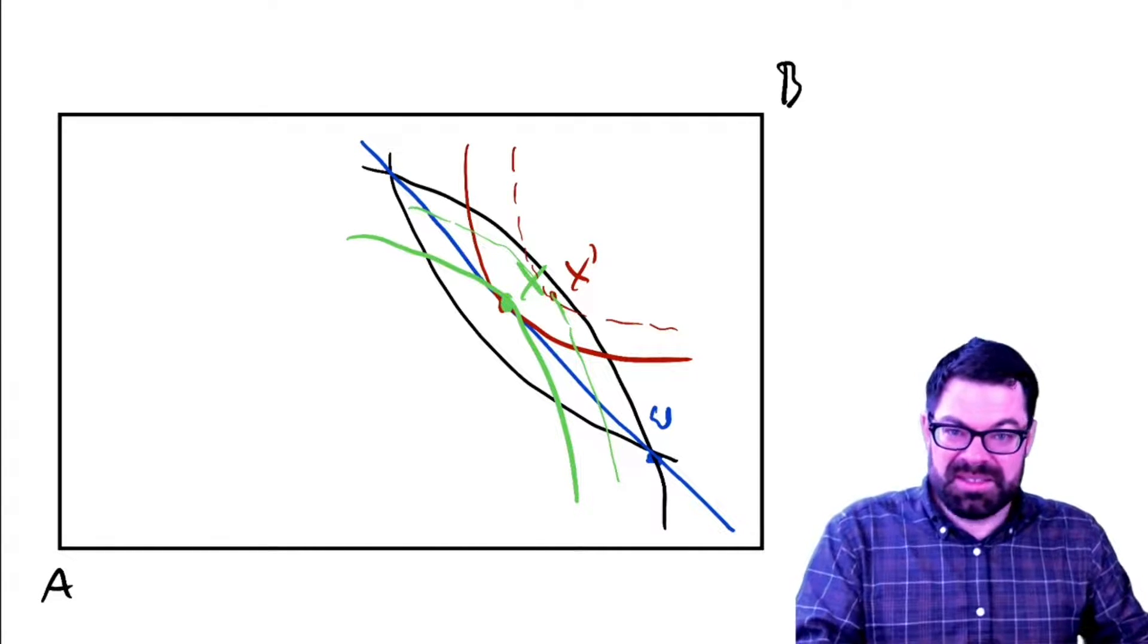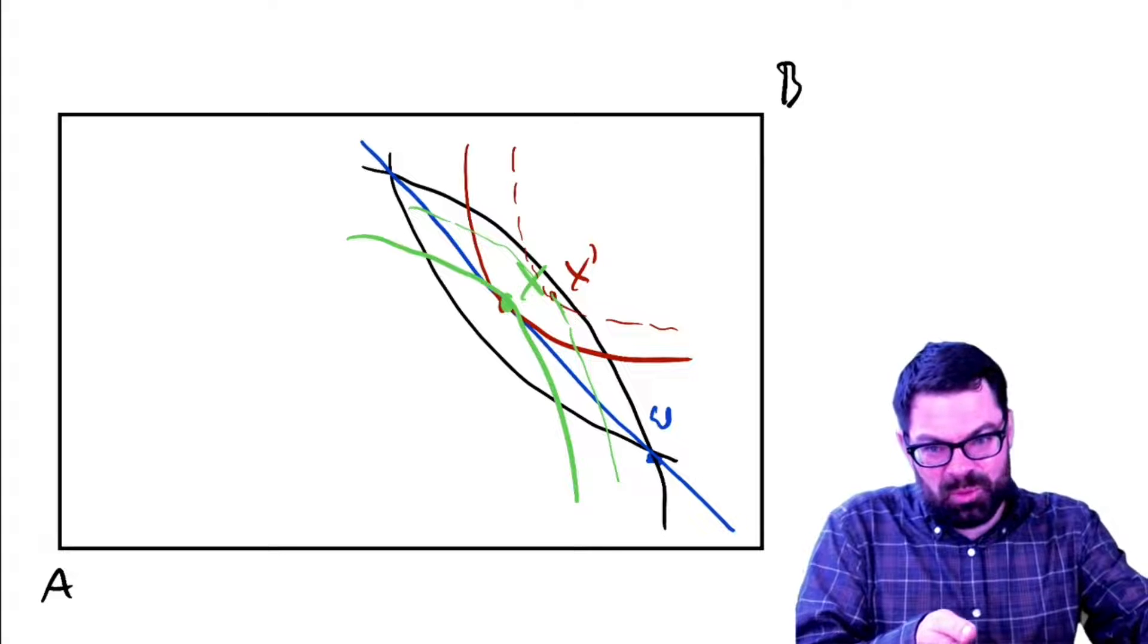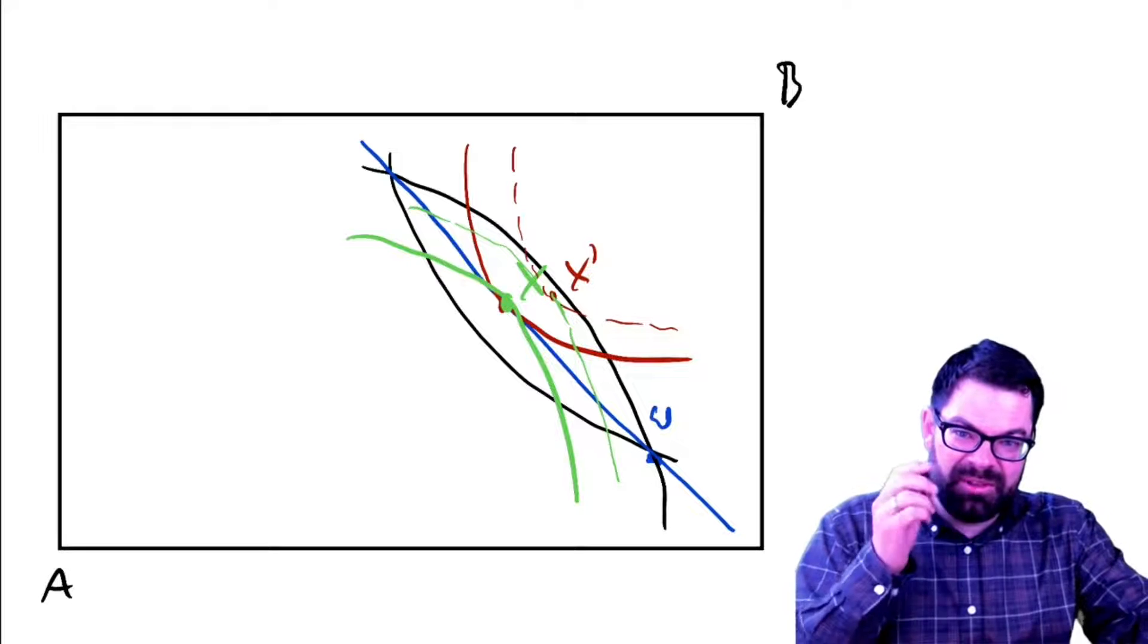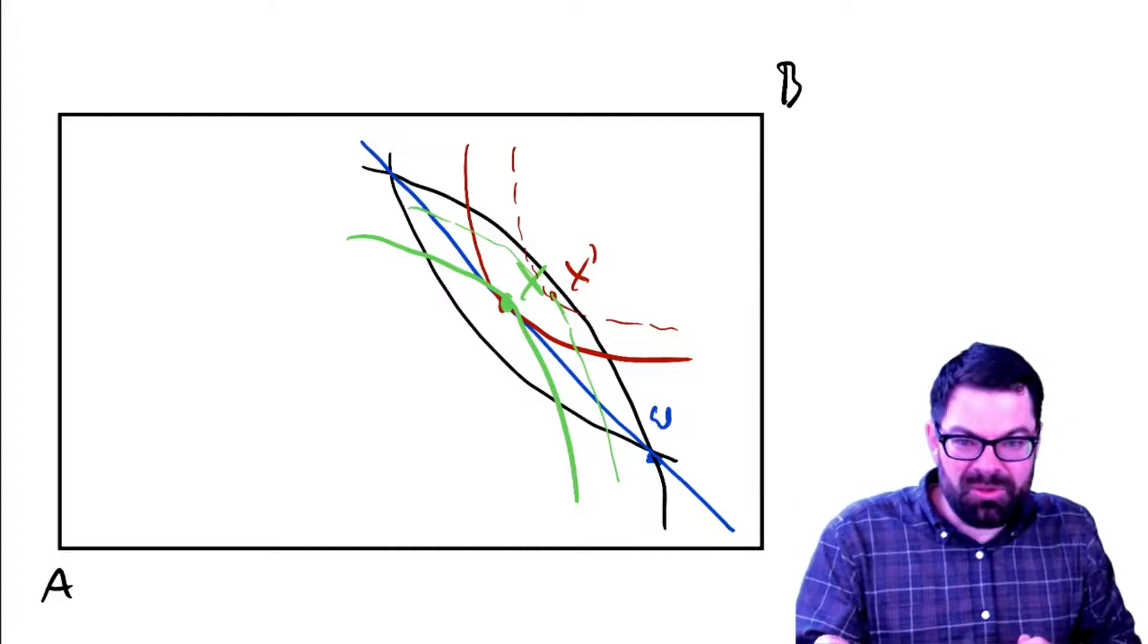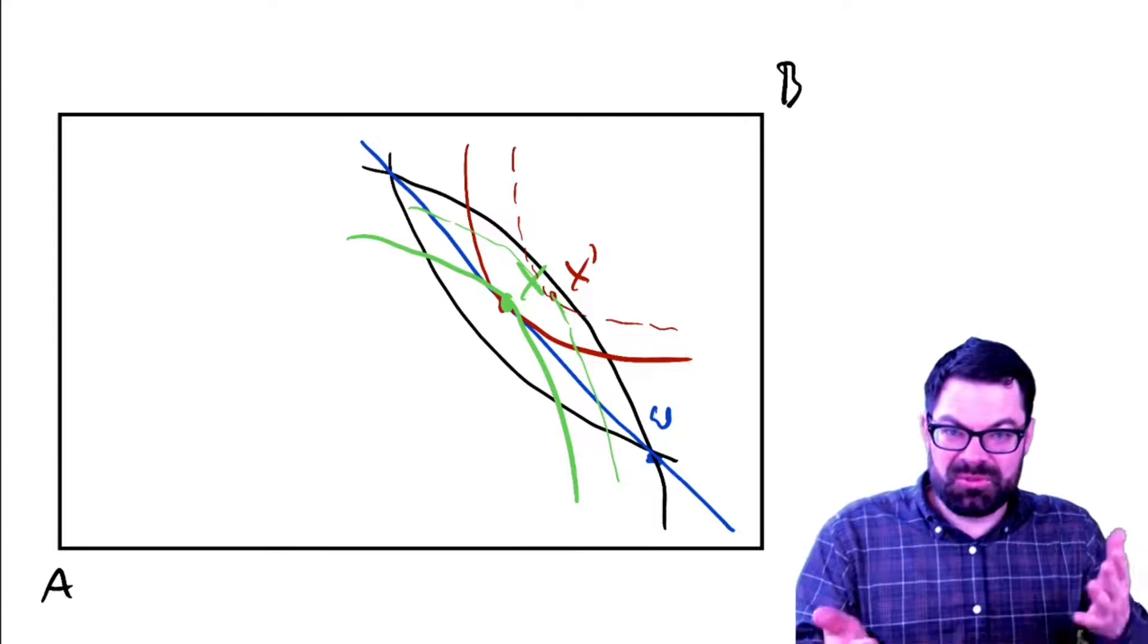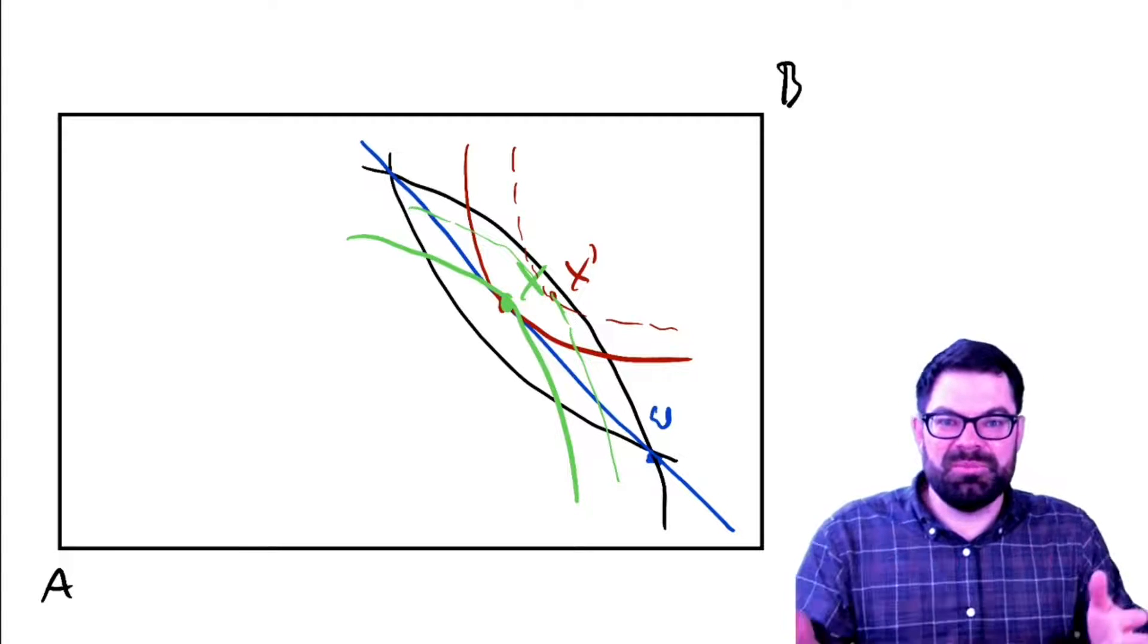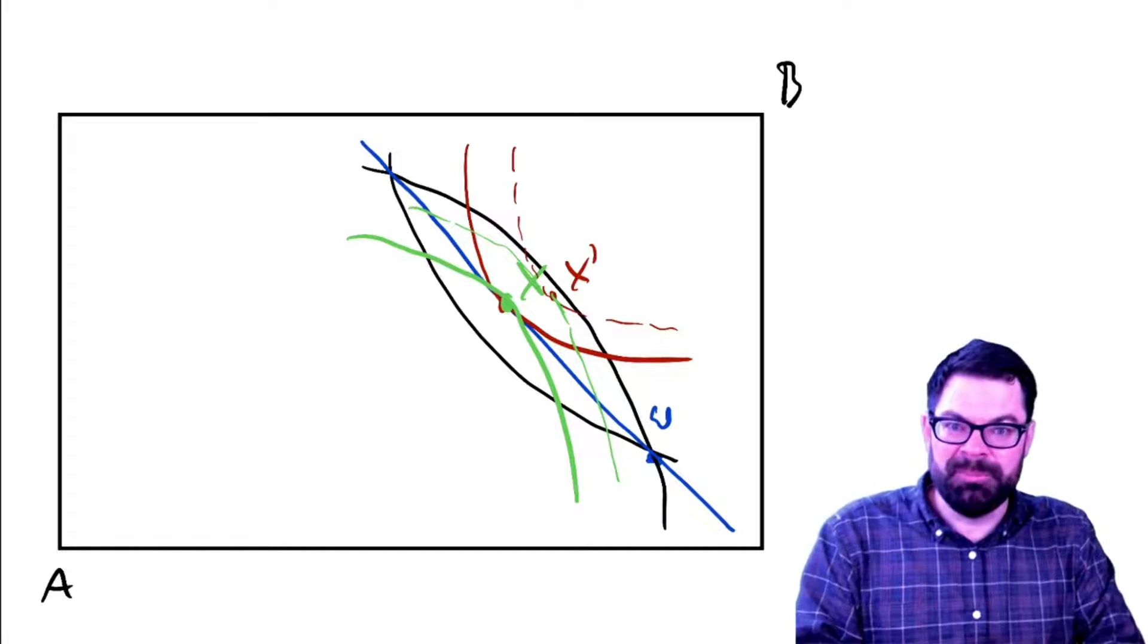So could we move away from this point and make both of them better off? That's great. But if we have to harm someone to make someone else better off, that introduces obviously some sort of trade-off and that makes redistribution or any policy intervention here a lot trickier.